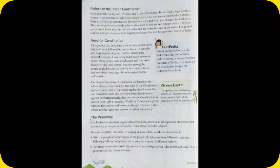Our next topic is the preamble. The Indian constitution begins with a preamble, which is an introductory statement that explains the principles on which the constitution of India is based. To understand the preamble, let us look at some of the words mentioned in it. First, 'We, the people of India' means all the people of India — speaking different languages, following different religions, rich or poor, or staying in different regions. Second, 'sovereign' means free from the control of any foreign power; the citizens of India elect a government that makes the laws.